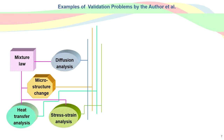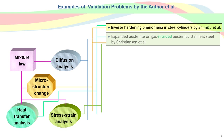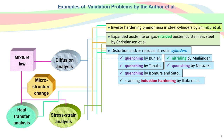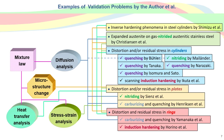I'd like to give examples of the validation performed on the code of the heat treatment simulation that I was involved in. Some validations were performed only on the function of heat transfer or diffusion coupled with the prediction of microstructure changes. Others are mostly based on published validation experiments using specimens with simple shapes such as cylinders, bars, and rings. This shows twelve examples, but I will introduce three, surrounded by a red frame.